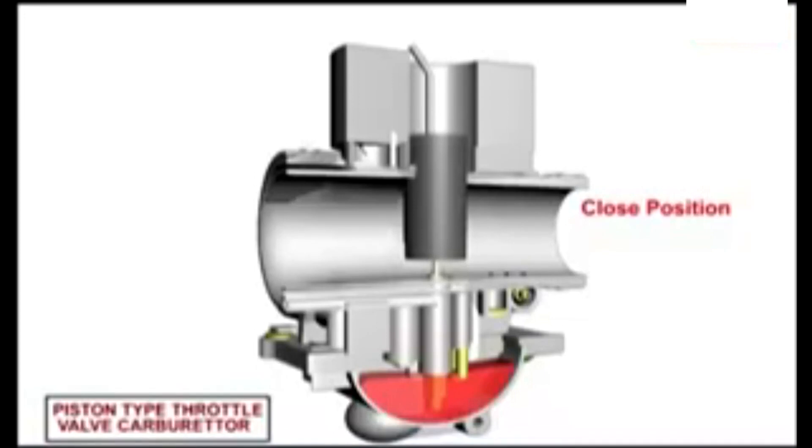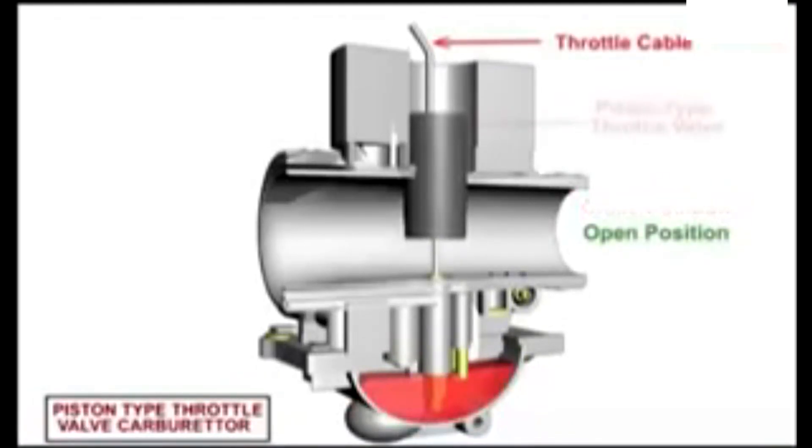In a piston or round slide type carburetor, the slide is operated directly by the throttle cable. This controls how much air can travel through the carburetor.